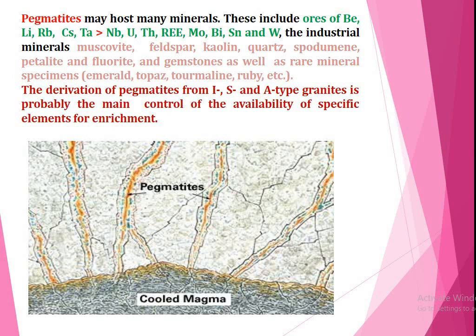Now, the pegmatite may host many minerals and this includes the ores of beryllium, lithium, rubidium, cesium, tantalum, niobium, uranium, thorium, rare earth elements, molybdenum, bismuth, tin and wolframite. The industrial minerals include muscovite, feldspar, kaolin, quartz, spodumene, petalite, fluorite.